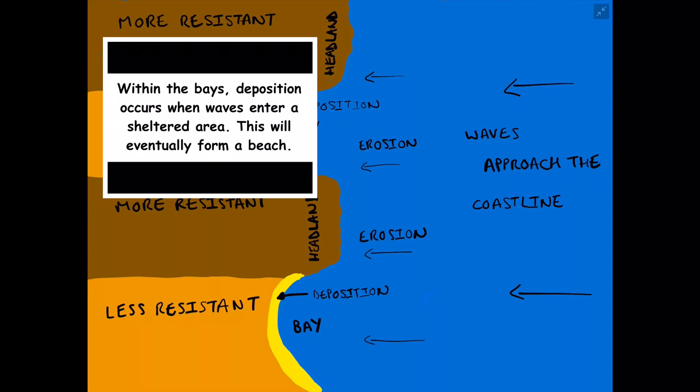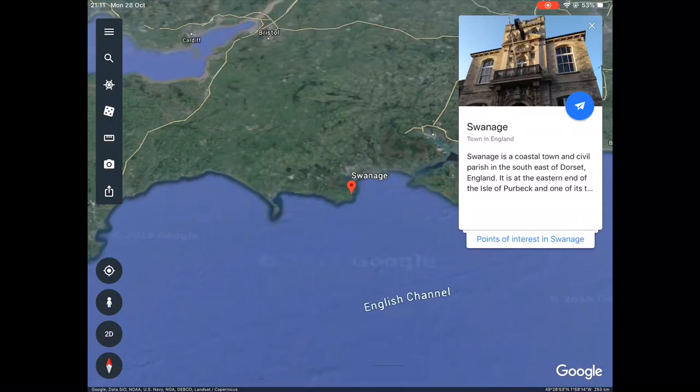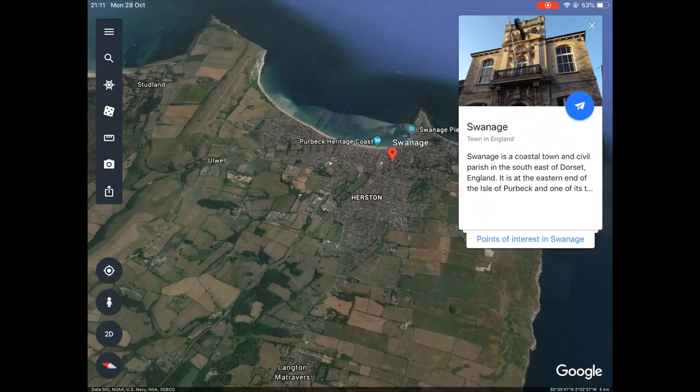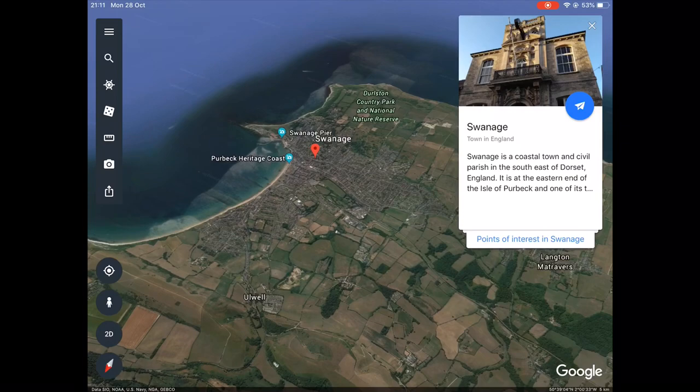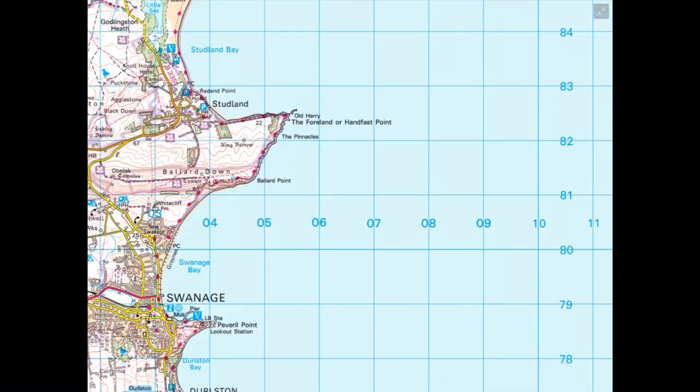A UK example of a headland and bay is on the south coast of England, known as Swanage Bay. This is a bay that is surrounded by two headlands, as you can see on the map now.